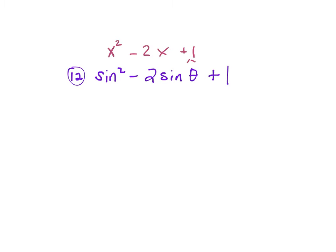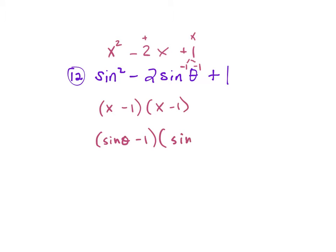So that wouldn't work, because they have to multiply to 1 and add to negative 2. Negative 1 and negative 1 work. So we'd write x minus 1 times x minus 1. But we substituted x for sine, so we change it back: sine θ minus 1, times sine θ minus 1, which we can write as (sine θ minus 1)².